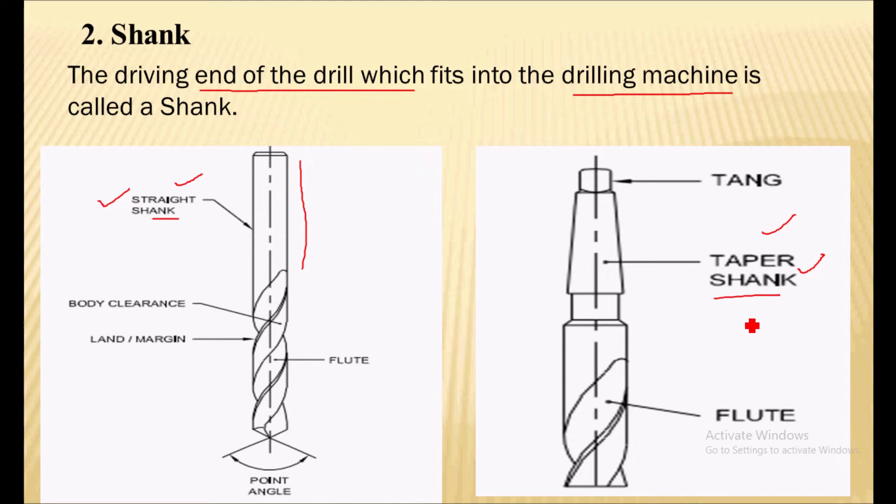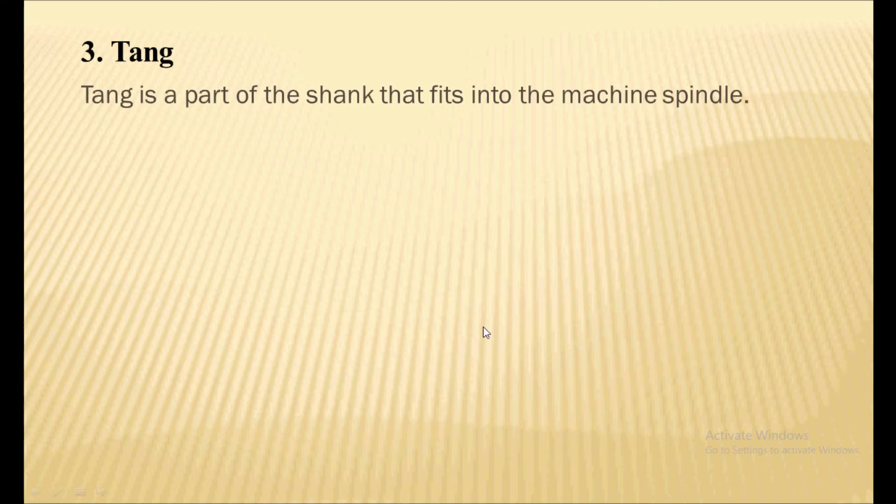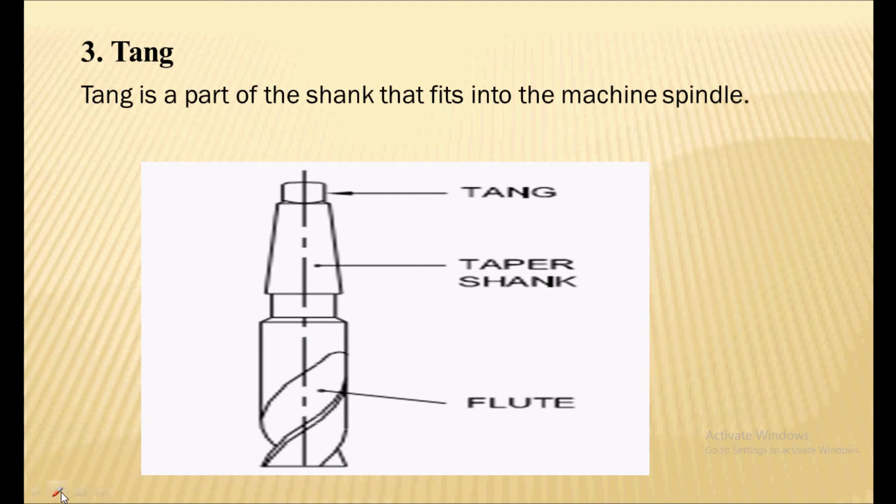Next part is the tang. The tang is the part of the shank that fits into the machine spindle. So this portion is called the tang, which fits into the machine spindle.